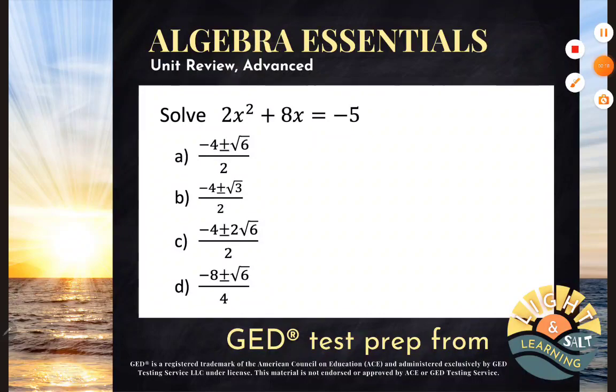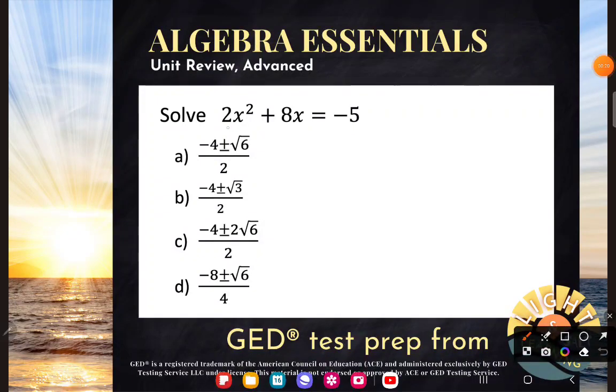So this problem says solve 2x squared plus 8x equals negative 5. And this is what I want you to notice about this equation. Notice that it has both an x squared term and an x term. You could try to solve this all day long with our three wisdom principles of simplifying, getting the x's to the same side, and trying to isolate.